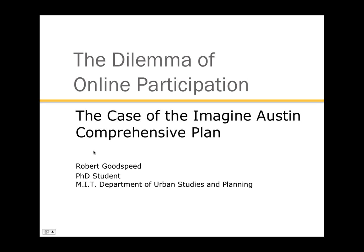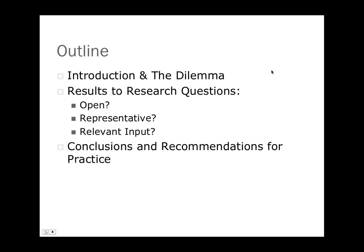Now I'm turning it over to Rob Goodspeed, who will talk about the planning process in Austin. Rob has titled his remarks 'The Dilemma of Online Participation.' He'll provide an orientation to the process he was studying — also in Austin — followed by results for three research questions, and then conclusions and recommendations for practice.